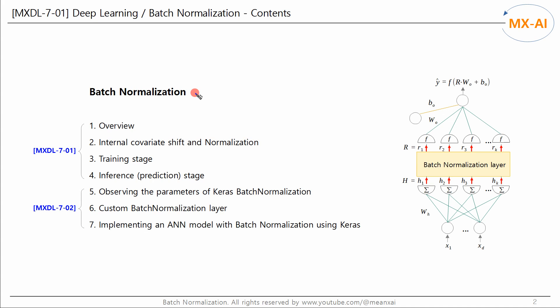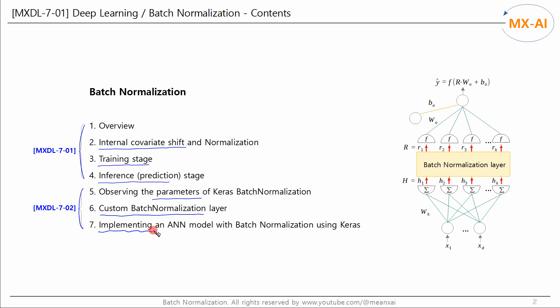Let's take a look at the full table of contents. In the first video, we will look at what the internal covariate shift problem is and how to solve it, and how batch normalization works during training and during prediction. In the second video, we will look at how the internal parameters of the batch normalization layer change using Keras, implement a batch normalization class from scratch using a Keras custom layer, and finally implement a neural network model with batch normalization using Keras.